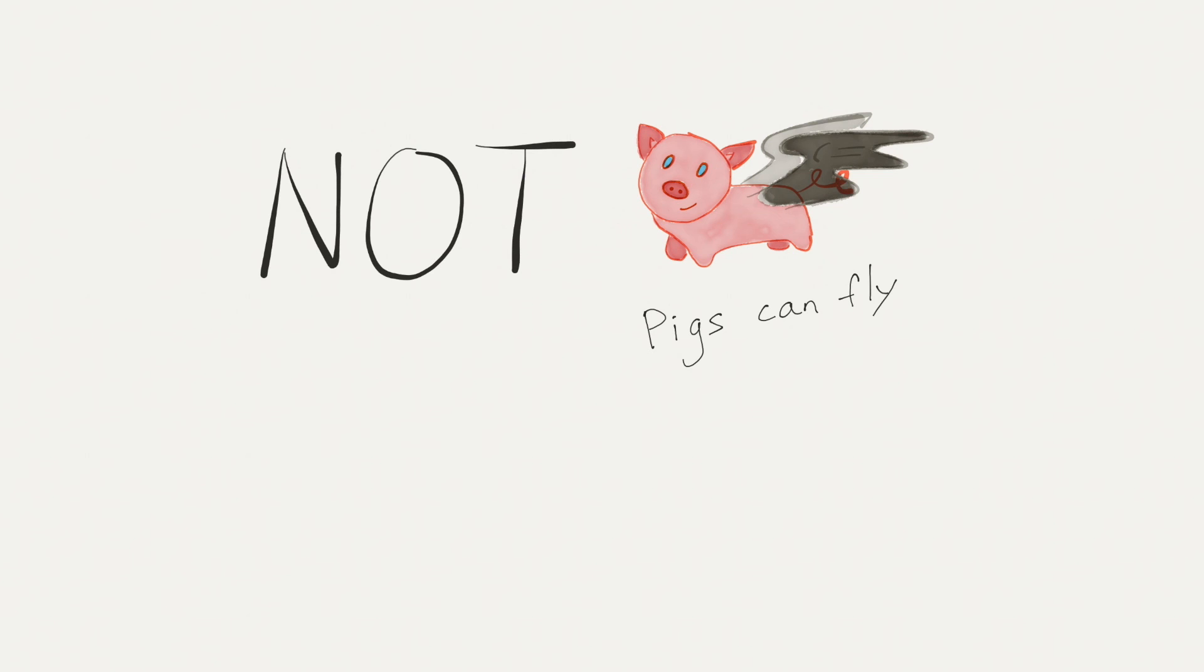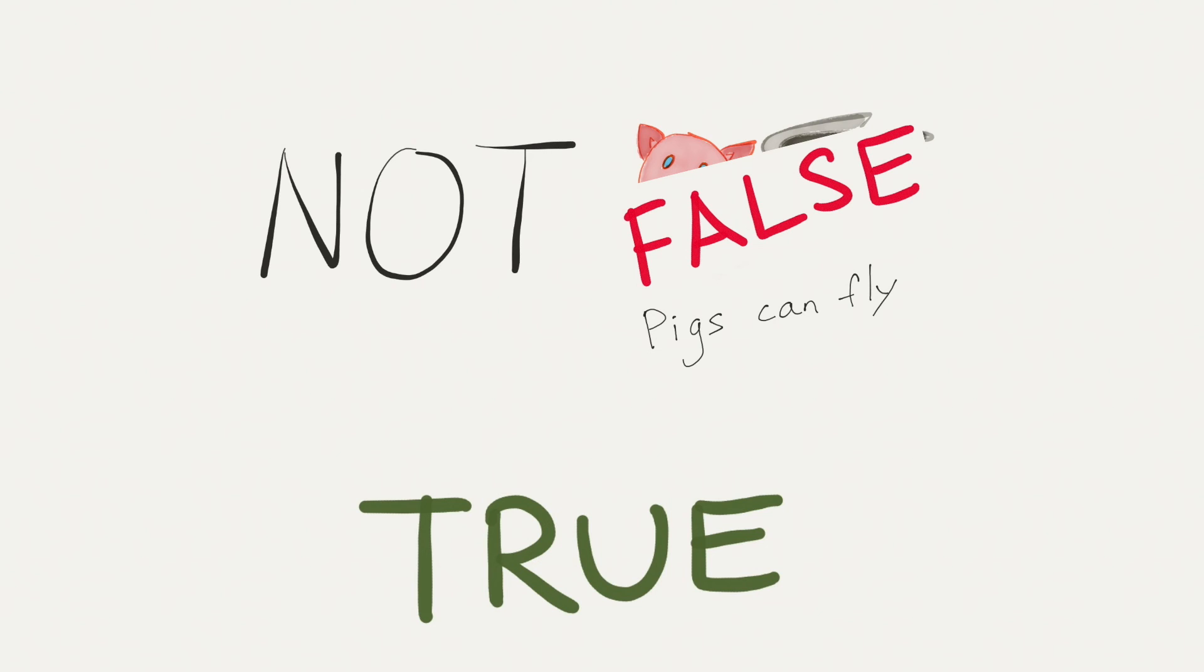Not is simple, it's the opposite. Not true is false, not false is true. Not pigs can fly is true, because pigs can fly is false, but not false is true. The symbol for not is an exclamation mark.